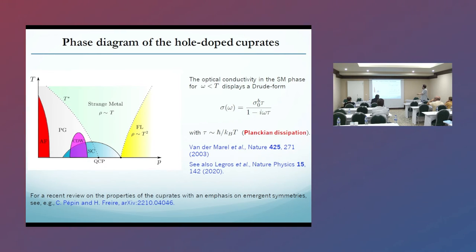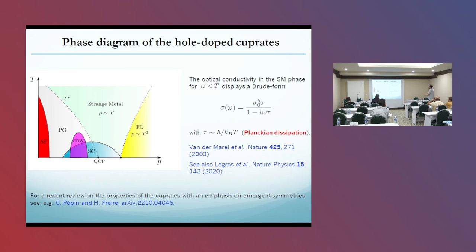The scattering time is proportional to h-bar over k_B T — Planckian dissipation — and this was first demonstrated in a work from 2003 and was also seen in a very recent work from 2020.